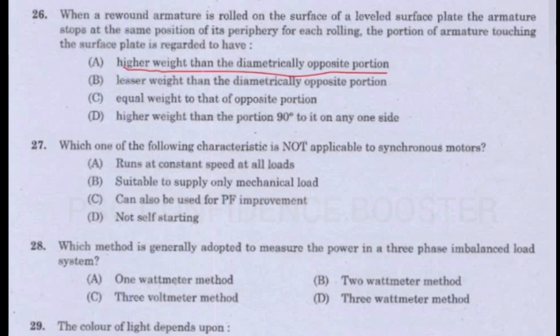Question number 27. Which one of the following characteristics is not applicable to synchronous motors? Option A - Runs at constant speed at all loads. Option B - Suitable to supply only mechanical load. Option C - Can also be used for power factor improvement. Option D - Not self-starting. Answer is Option B: Suitable to supply only mechanical load.